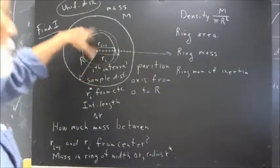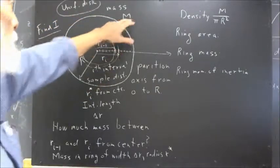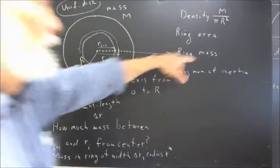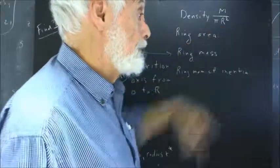Okay, first of all, the uniform density of this thing is just the mass divided by the area, which is just mass over pi big R squared.